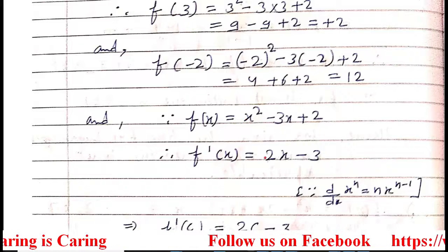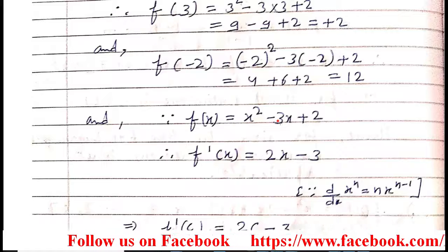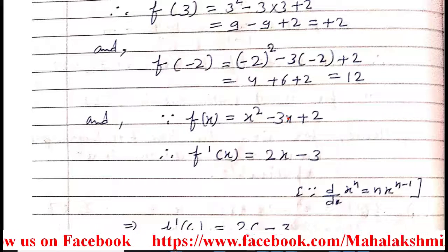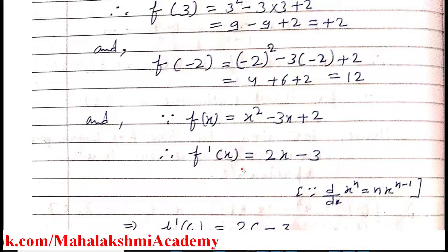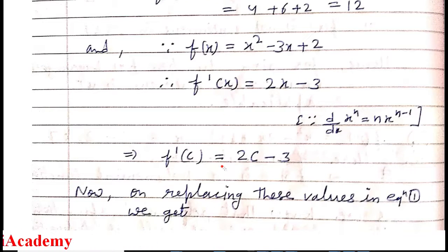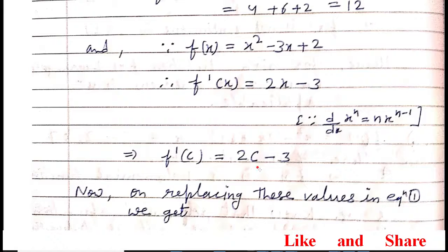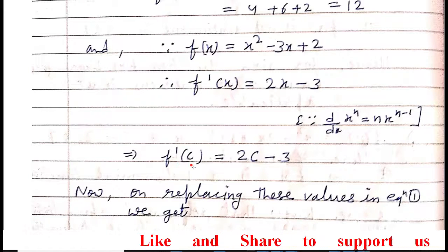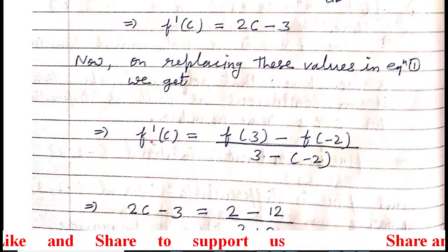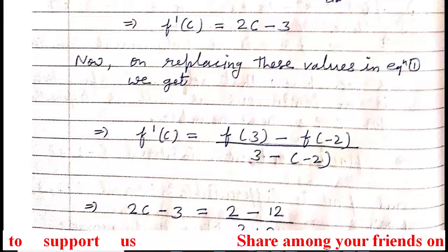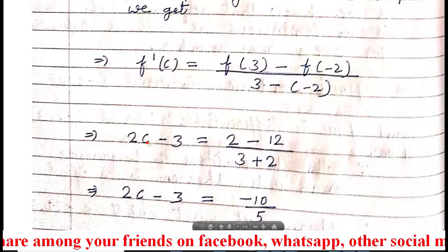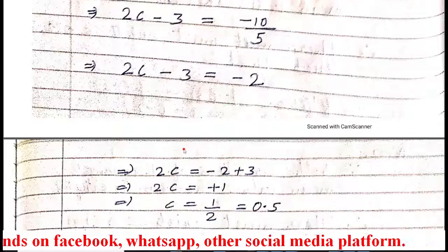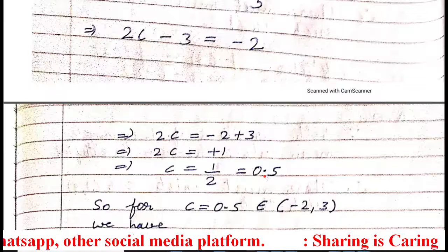So the differentiation of x² gives 2x, and 3x differentiates to 3 (coefficient 3 multiplied by 1), and the constant 2 differentiates to 0. So f'(x) = 2x - 3. We want f'(c), so replace x by c: f'(c) = 2c - 3. Now substituting all values into the formula: f'(c) = [f(3) - f(-2)] / (3 - (-2)), which gives us c = 0.5.